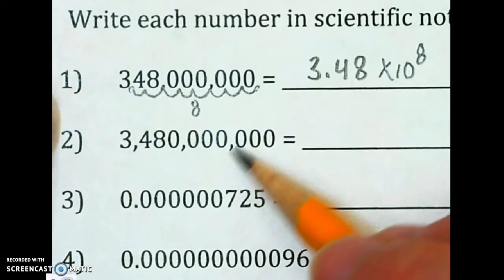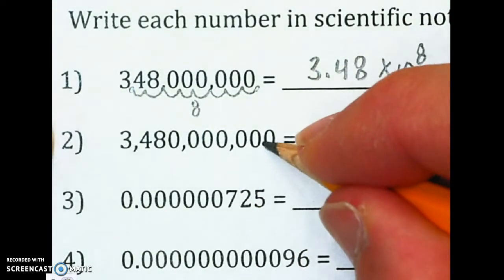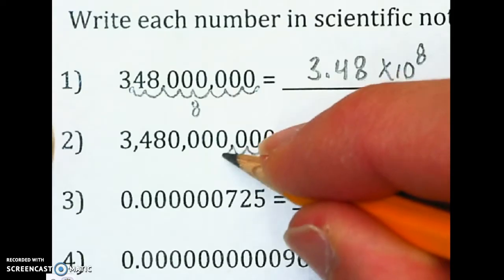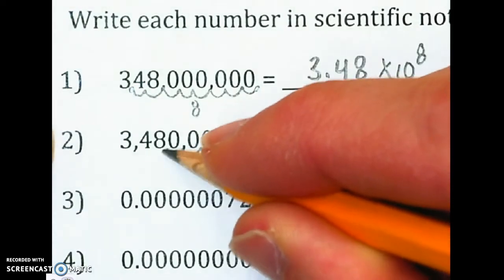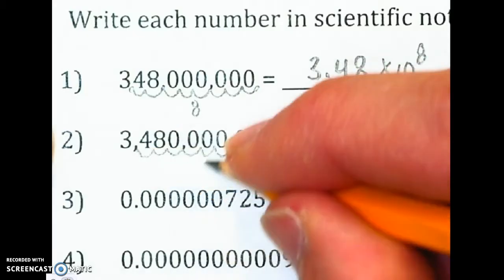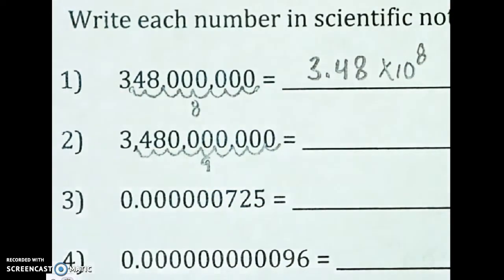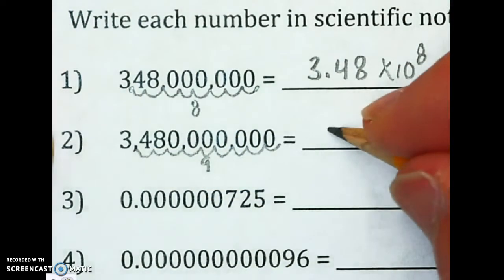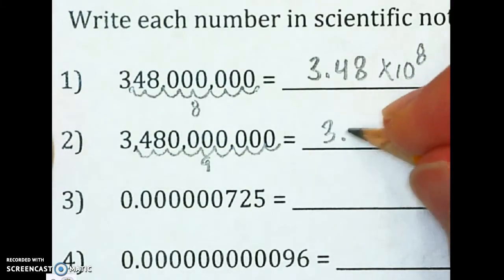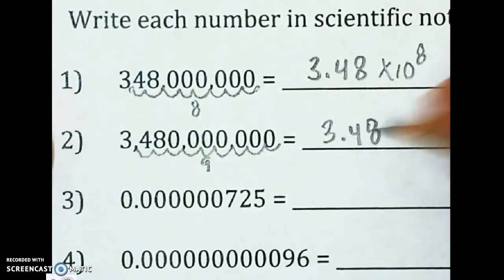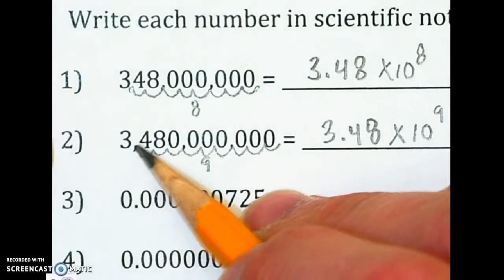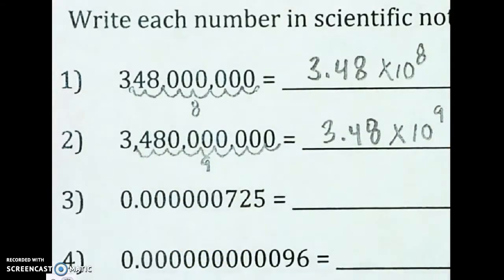I'm going to do that again here on this one. Count my spaces. 1, 2, 3, 4, 5, 6, 7, 8, 9. Write a little nine here so I don't forget. So this one's 3.48 times 10 to the ninth, because I moved it nine spaces to get it up behind the three and in front of the four.